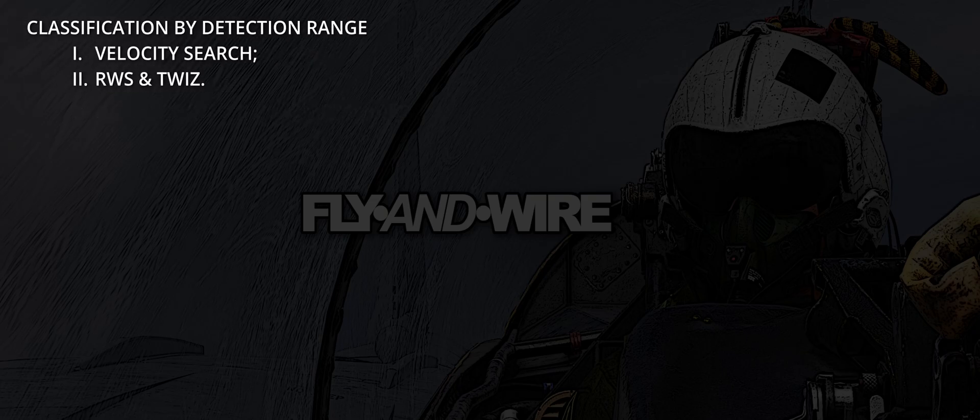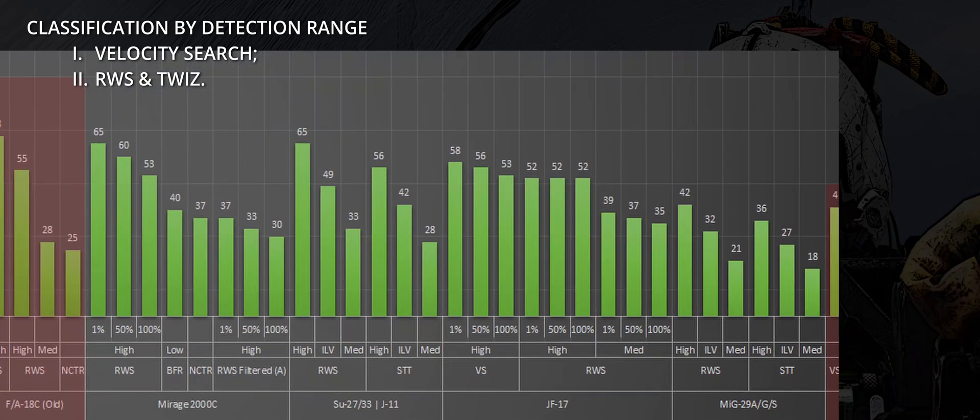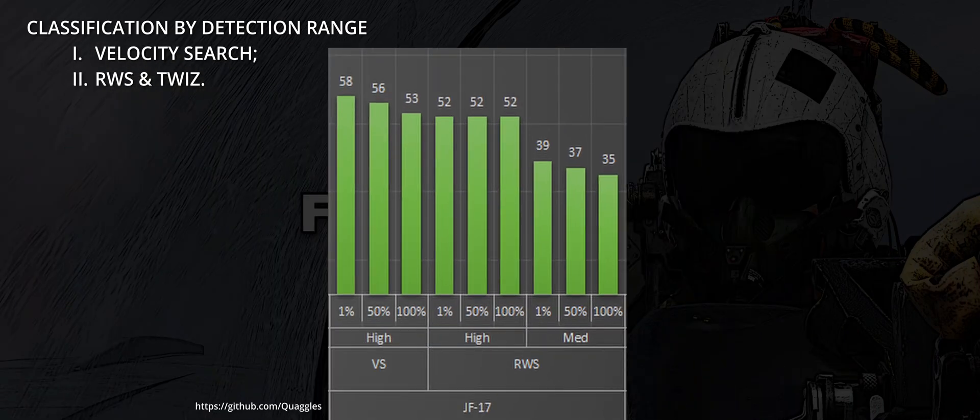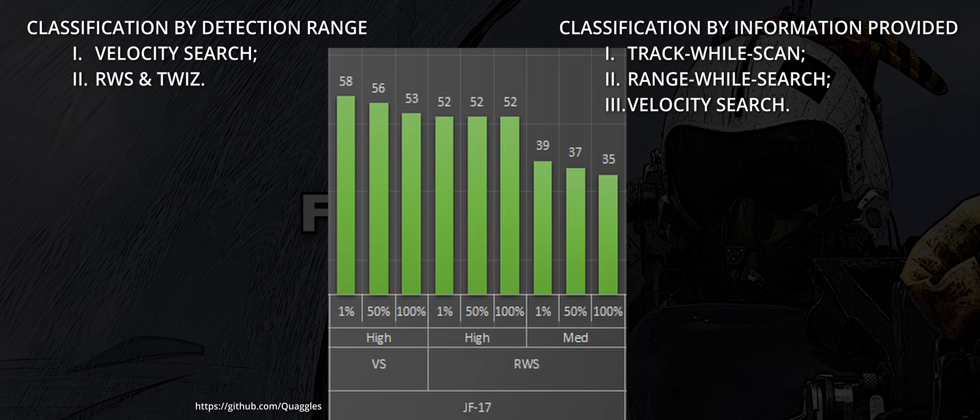Following the first criterion, velocity search is the most performing. VS does not provide ranging information, a feature that can affect the detection range, as Quaggle's brilliant chart shows. Both RWS and TWIS are slightly more limited, but they provide a plethora of additional details. To summarise, on a range basis: velocity search, then track while scan, then range while search together. Considering the information provided instead: TWIS, then range while search, and lastly velocity search.